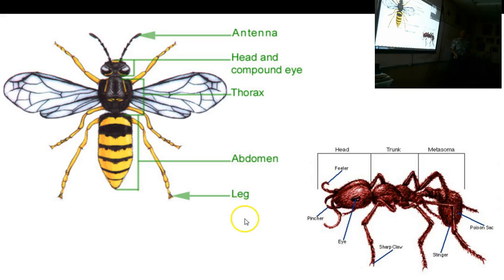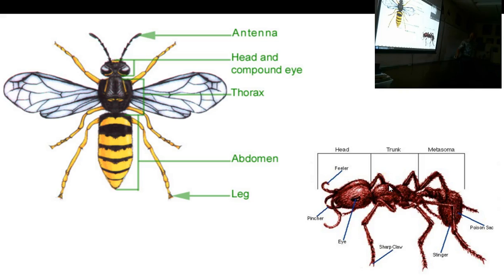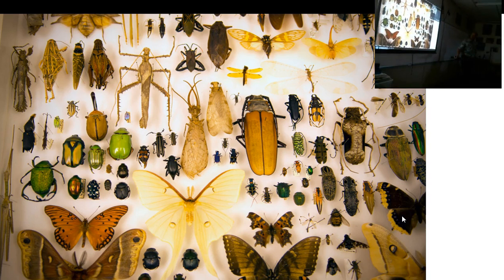The general insect body plan has six legs and three pairs of legs. Generally speaking, two pairs of wings — here are the two pairs of wings on this bee. They have one pair of antennae, a head, a thorax, and a segmented abdomen. Same thing for this ant — three pairs of legs, one pair of antennae, and three body parts. Worker ants don't have wings, but the queens do.